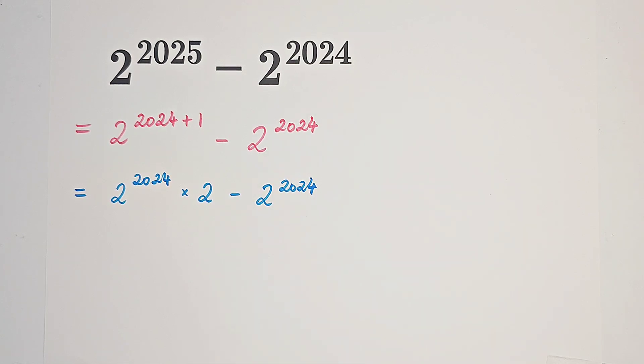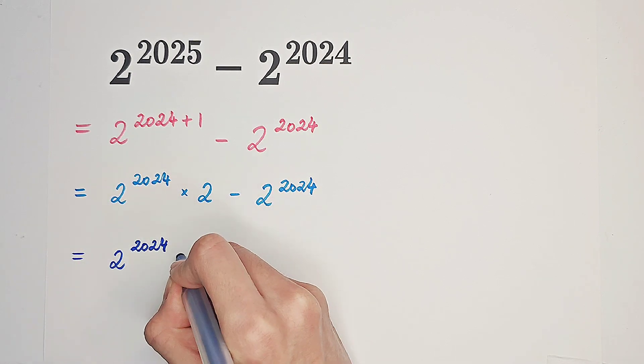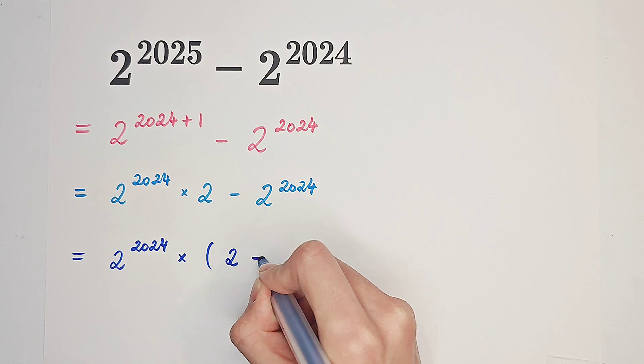Very good. And we can take out 2 to the power of 2024. We have 2 minus 1 here in the bracket.